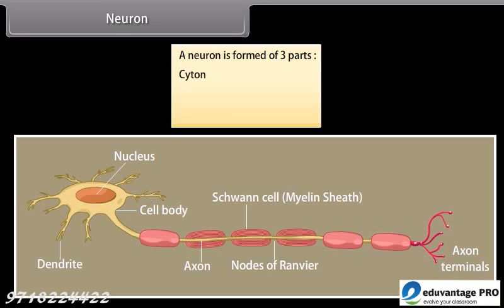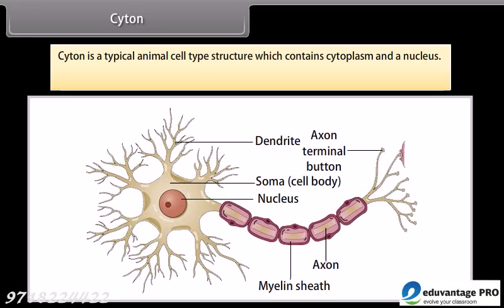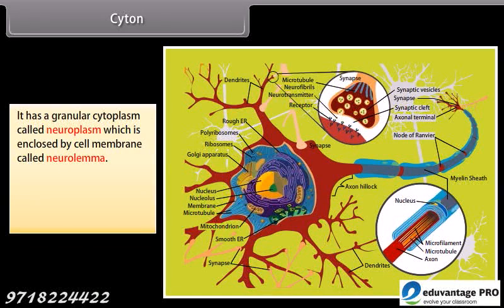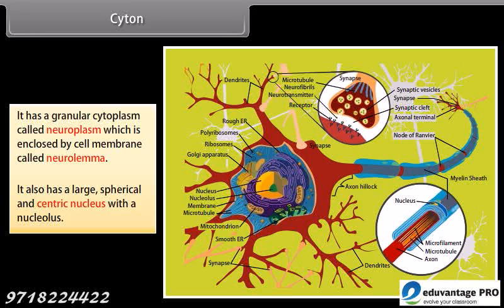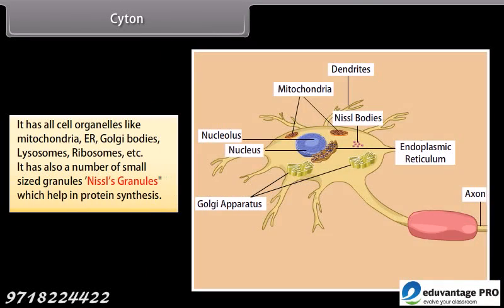A neuron is formed of three parts: cytone, dendrites, and axon. Cytone is a typical animal cell-type structure containing cytoplasm and a nucleus; it is spherical in shape and about 4 to 135 micrometers. It has granular cytoplasm called neuroplasm, enclosed by a cell membrane called neurolemma, and a large spherical centric nucleus. It contains all cell organelles like mitochondria, ER, Golgi bodies, lysosomes, and ribosomes, as well as small granules called Nissl's granules, which help in protein synthesis.